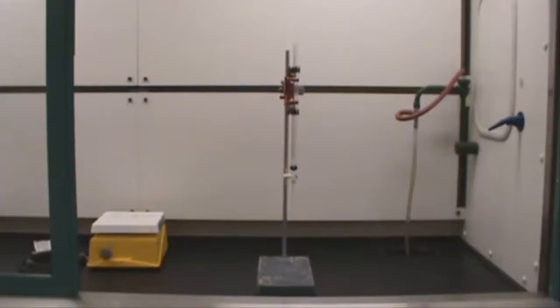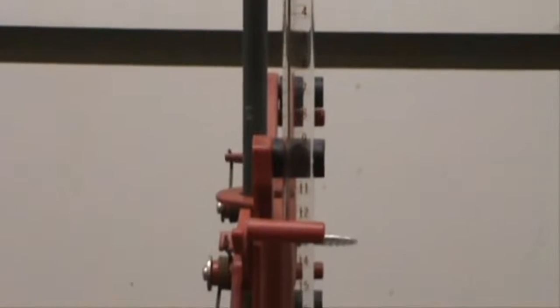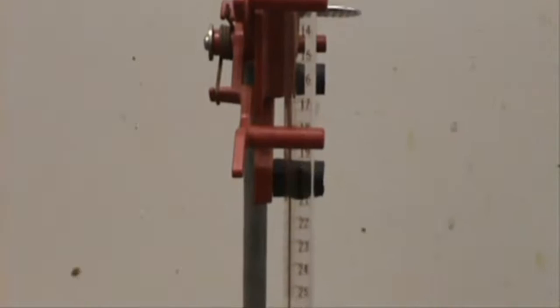This is called a 25 milliliter burette. It is used for dispensing a specific volume of liquid into another container. The numbers go down, and the smaller lines indicate 0.1 milliliters each.